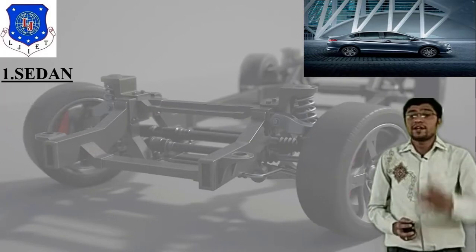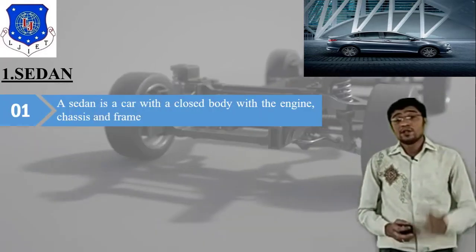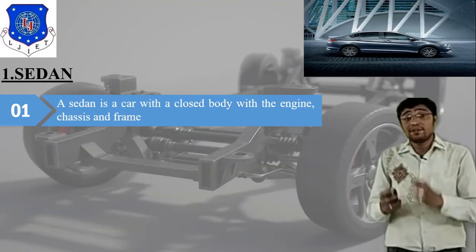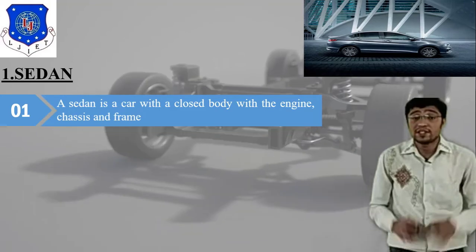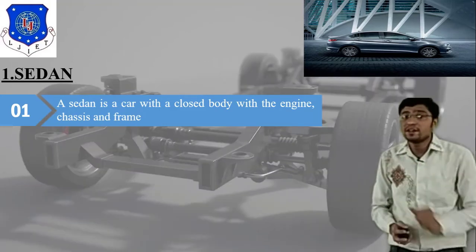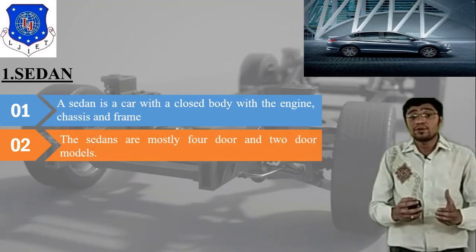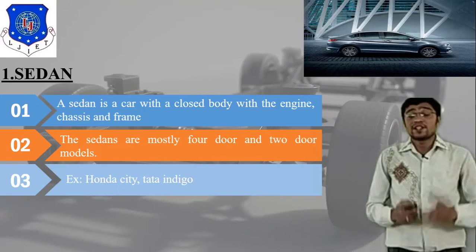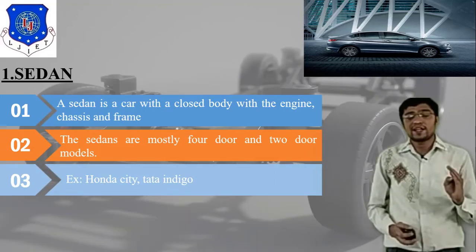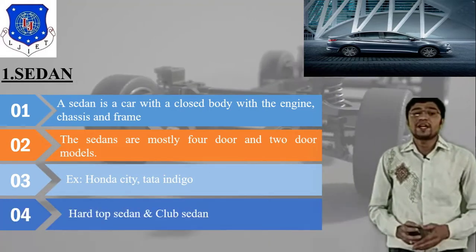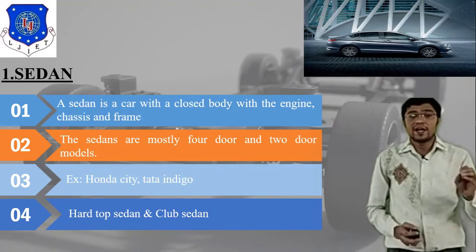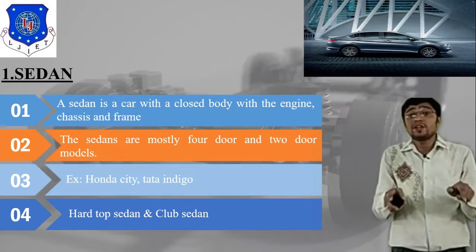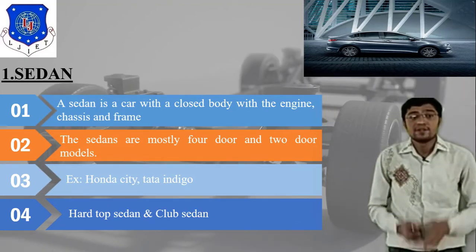The first car body type is sedan. A sedan is a car with a closed body connected with the engine frame and chassis. As you can see in the image, it is a closed body connected with the engine, chassis, and frame. Sedans are mostly four-door or two-door models. Examples are Honda City and Tata Indigo. There are mainly two types of sedan: hard top sedan and club sedan.